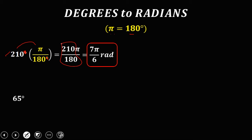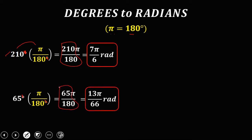For this angle, 65 degrees, multiply by pi over 180. Then cancel the degree unit. That's 65 pi over 180. Then reduce 65 over 180 — it's 13 pi over 36 radians. So this is how to convert degrees to radians.